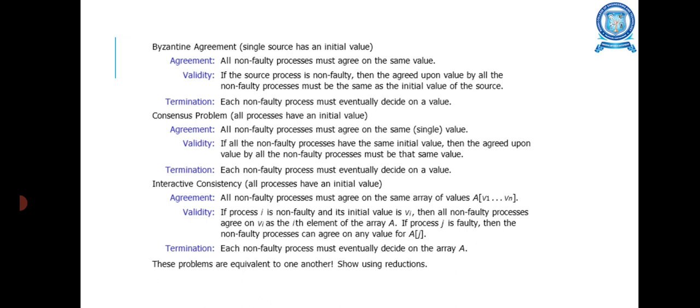The consensus problem: All processes have an initial value. Agreement is that all non-faulty processes must agree on the same single value. Validity: If all non-faulty processes have the same initial value, then the agreed-upon value by all non-faulty processes must be the same value.